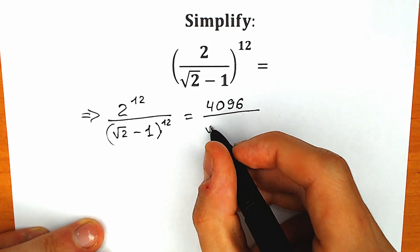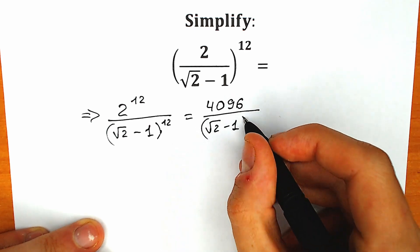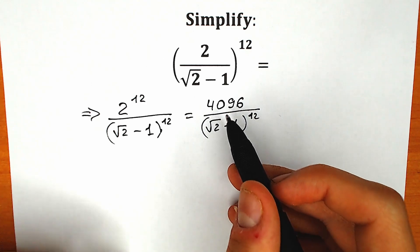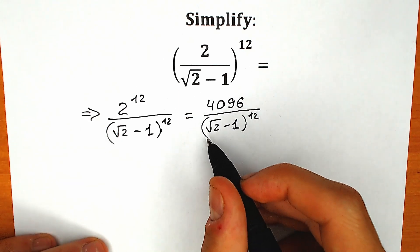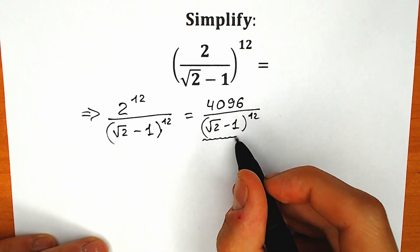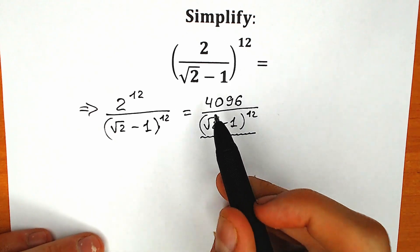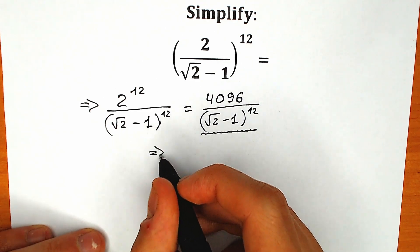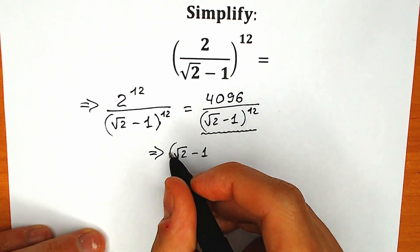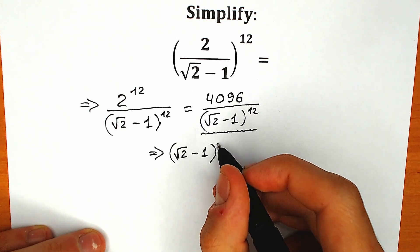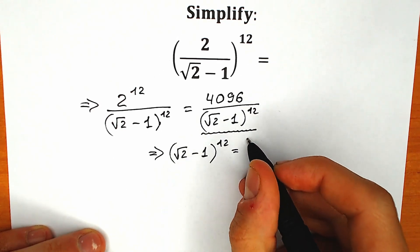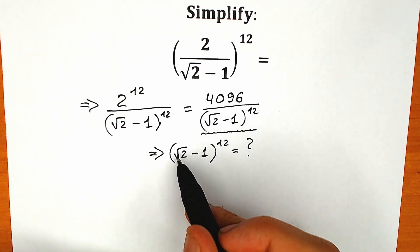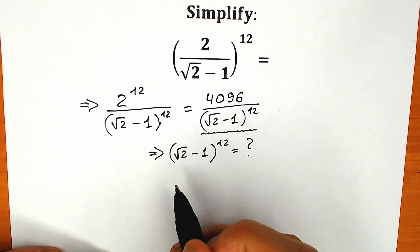In our denominator we have square root of 2 minus 1 raised to the power 12. The main challenge is in the denominator. But in our numerator we have a constant, so everything is fine. Right now let's forget a little bit about this fraction and find this expression first. We need to find square root of 2 minus 1 raised to the power 12. You can easily expand it to the power 12 with coefficients, but I'm going to show you a better method.